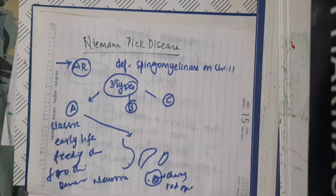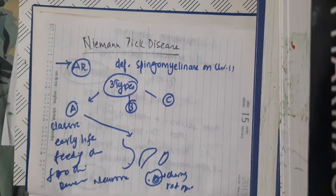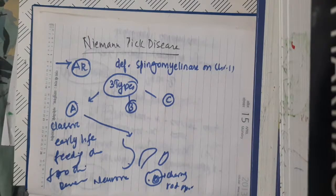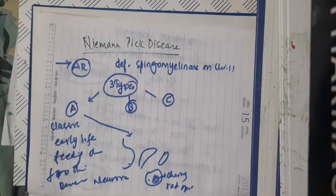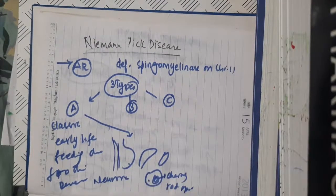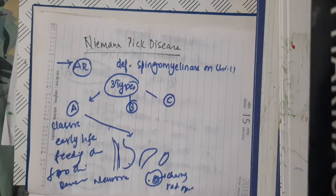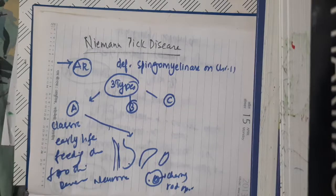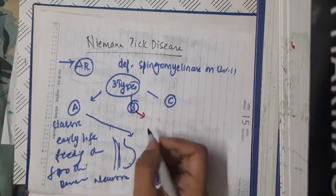So, the classical form is type A Niemann-Pick disease, where the clinical features begin early in life: feeding difficulties, failure to thrive, developmental delay, neuro regression, proberant abdomen, hepatosplenomegaly, and cherry red spot.